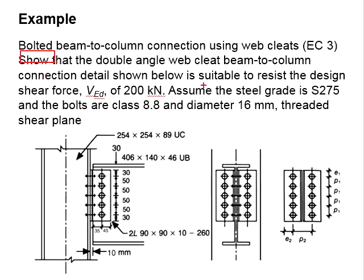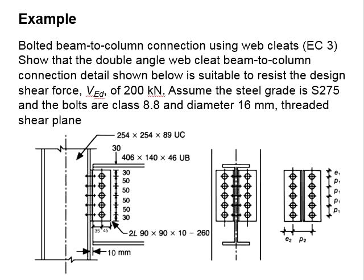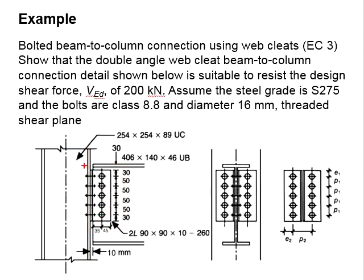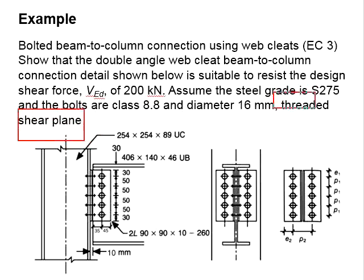You are asked to show that the connection is suitable to resist the design force of 200kN vertical load. To solve this, first determine the number of joints. There will be joints between the beam and the angle clips, connected by bolts, and joints between the columns and the angle clips, also connected by bolts. Looking at these joints, there will be 10 shear planes at each interface. The shear planes pass through the threaded region.